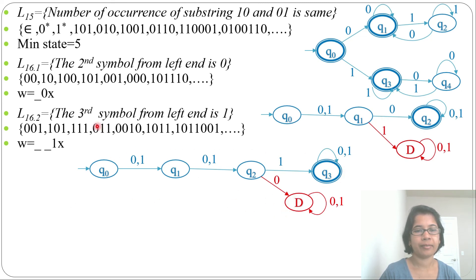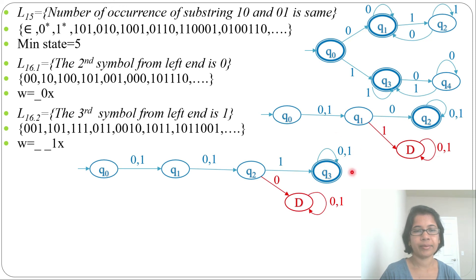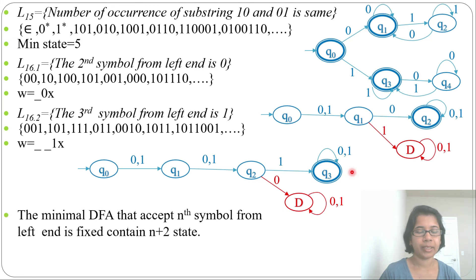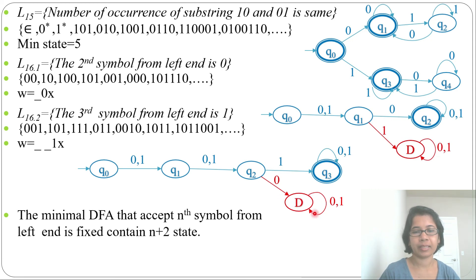Now this DFA accepts every string whose third symbol from the left is 1. You can verify with strings like '001', '101', '111', and so on. Notice the pattern: for the second symbol language it required 4 states (n=2, so n+2=4), and for the third symbol language it required 5 states (n=3, so n+2=5). In general, for the n-th symbol, it requires n+1 states for the NFA, plus 1 dead state, giving n+2 states total. Thank you.